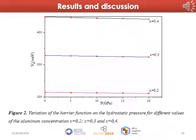In figure two, we represent the variation of the barrier height depending on the hydrostatic pressure. We note that for different values of the aluminum concentration, the height of the barrier depends on the applied hydrostatic pressure. The height of the barrier decreases with increasing hydrostatic pressure.